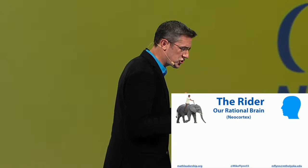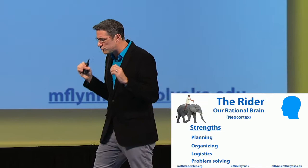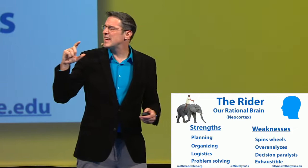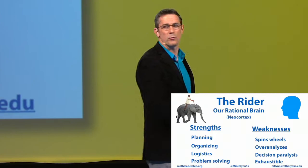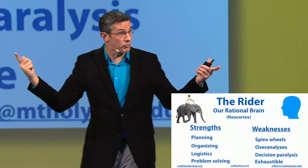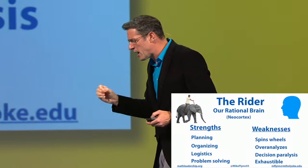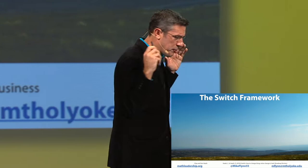The other part of the brain is our rider — that's the rational part, the neocortex. It governs our planning, organization, logistics, and problem solving. Our rider is so good at looking at information and figuring out the right course of action. But the rider has weaknesses too — it over-analyzes information and we may find ourselves with decision paralysis. How many of you have ever had that where you can't decide where to eat? That's what happens with our rider. It can also be exhausted — that analysis is tiring and our cognitive load can only handle so much.